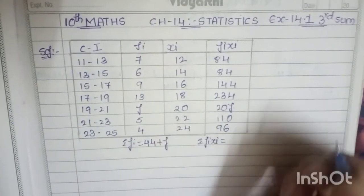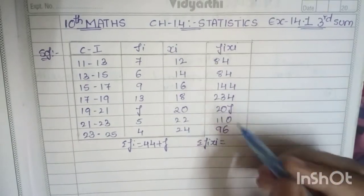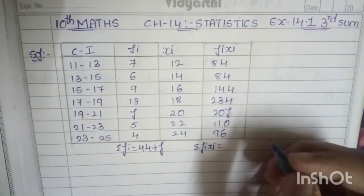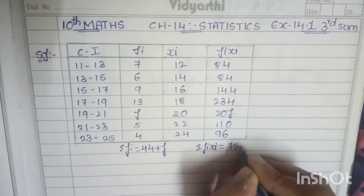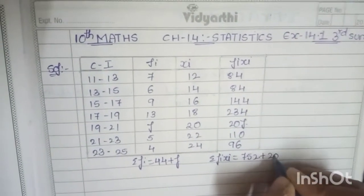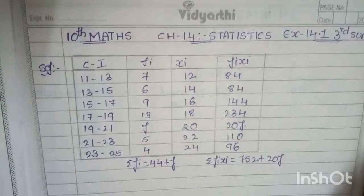Similarly here also, except leaving this one, you have to add all these values. So you get 752, then on adding 20f you have to write 20f plus 752.